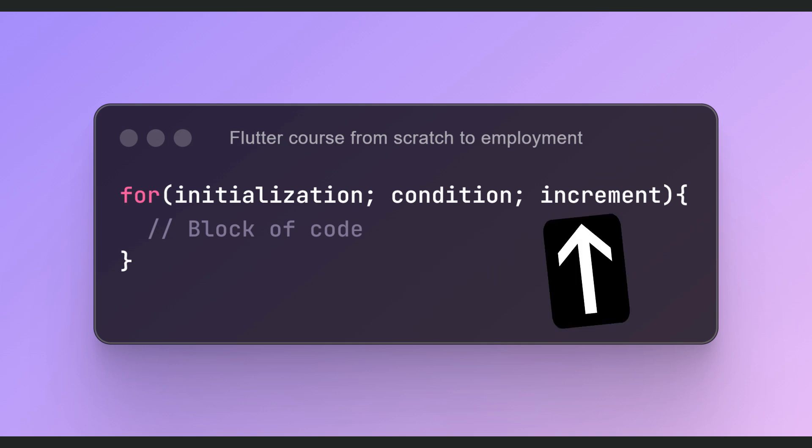Increment: this block of code is executed after each iteration of the loop. It typically increments or decrements the loop counter.